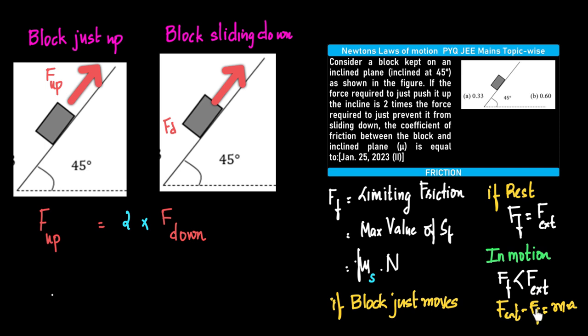It would be kinetic friction and not static friction. Now, according to the question, case one is that the body has to be pushed up, and case two is that the body has to be prevented from coming down.